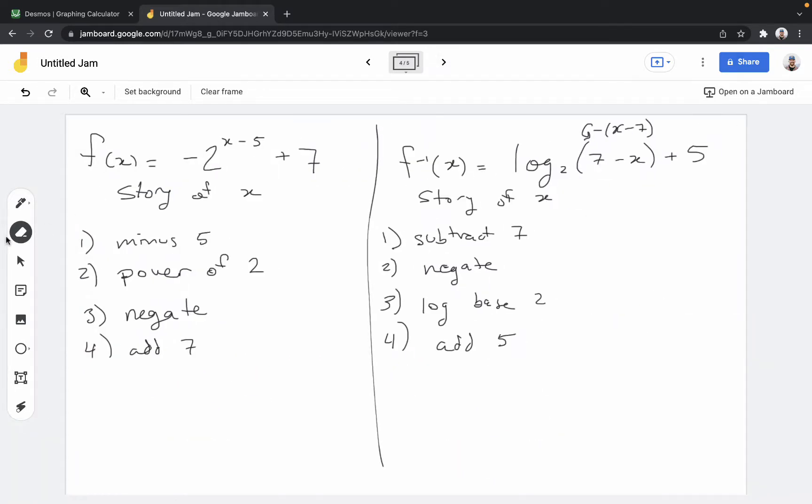Another thing we can look at is the story of x. In the original function, x is reduced by 5. It's taken as a power of 2. It's negated, or you could say opposite. And then 7 is added on, or it's increased by 7.